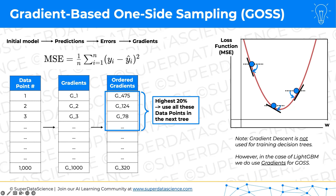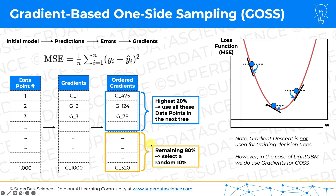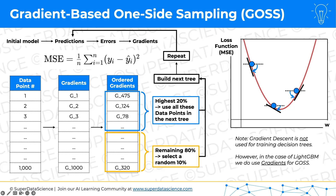That's exactly what the GOSS algorithm does. It takes the top 20% of points — those with the highest gradients — and uses all of these in the next decision tree. This is like smart sampling: showing the next decision tree only the rows with the highest gradients from the current model. Then out of the remaining 80%, we don't discard all of them — we select 10% of them at random, just for completeness and diversity. Using the top 20% and 10% of the bottom 80%, we build the next tree.